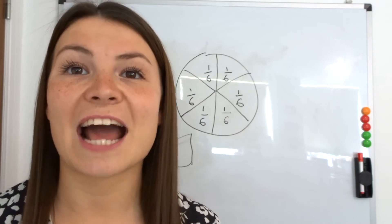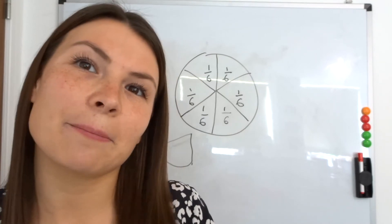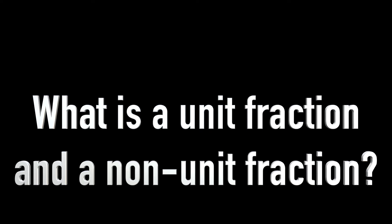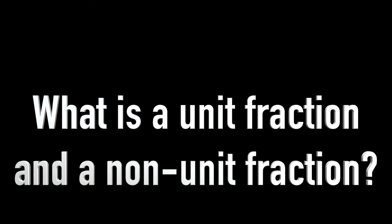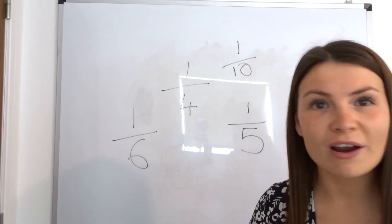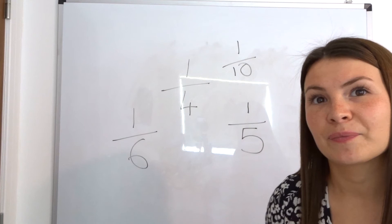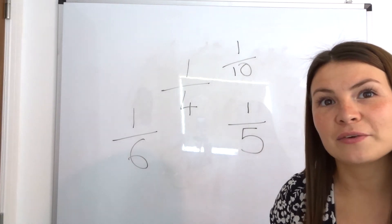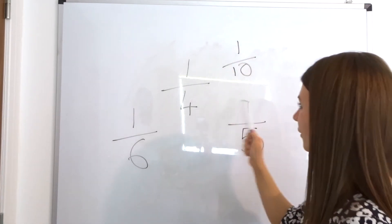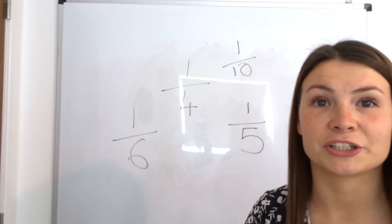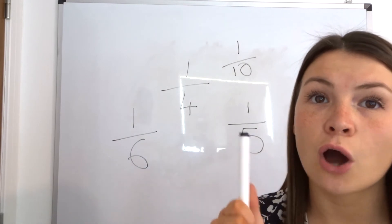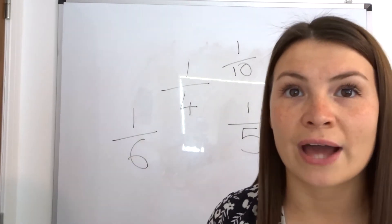I'm now going to move on to unit fractions and non-unit fractions. I want you to have a think about what you think a unit fraction is and what a non-unit fraction is. Here are some examples of unit fractions - what do they all have in common? Why are they unit fractions? Good - because they all have one as the numerator. So a unit fraction is where the number on the top is one.